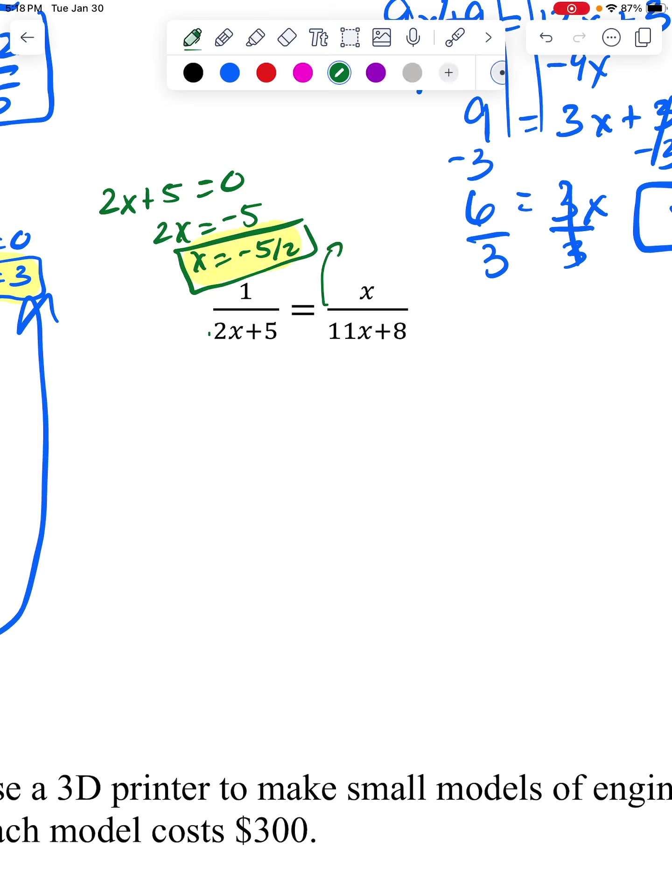Over here, 11x plus eight will equal zero if I'm going to take that negative eight over and divide by 11. Okay, well, those are gross numbers, but if I get either one of those numbers, I'm going to have to say that doesn't really work because it makes me have a zero on the bottom.